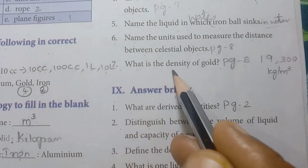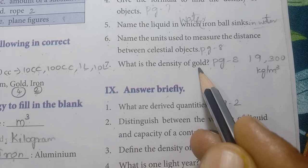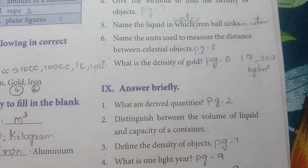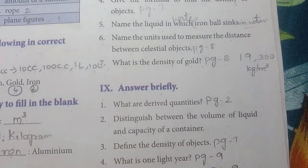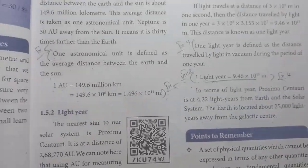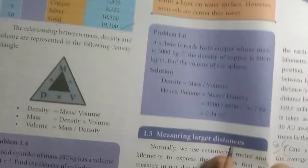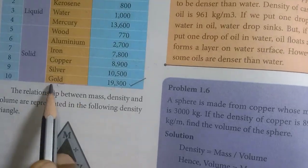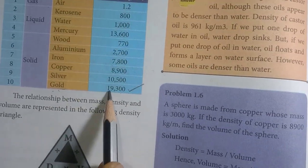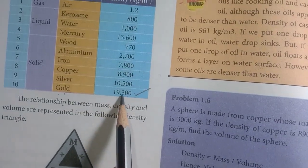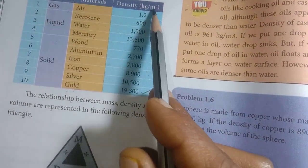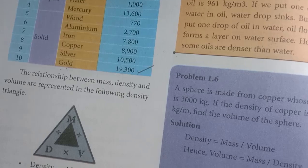Seventh: what is the density of gold? Page number 8. The density of gold is 19,300 kilogram per meter cube.